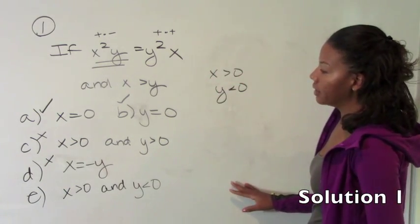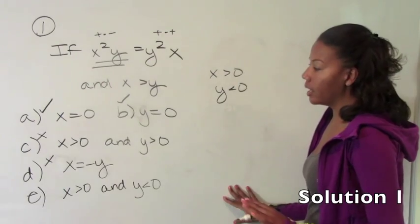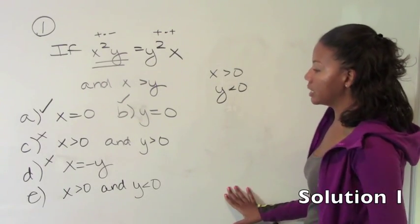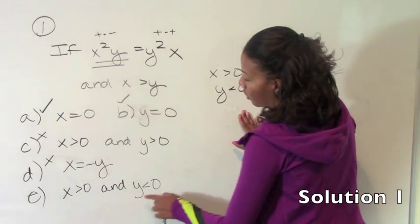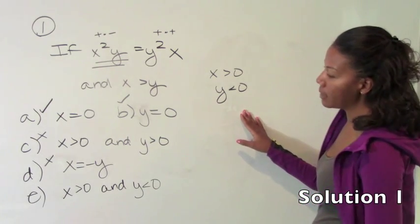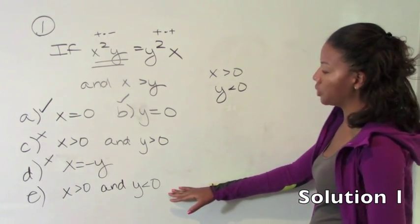Now e, given the way we set up d, is actually the exact same thing as d. It says x is greater than and y is less than zero. So for the same reason that d is not true, e cannot be true.